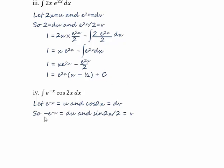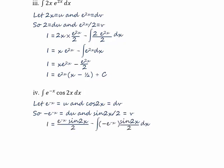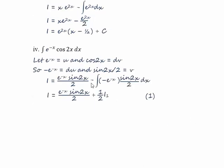As a sanity check: integrating du gives minus minus e to the minus x, which is the same as u. And differentiating sine(2x) over 2 gives 2·cos(2x) over 2 — the 2s cancel and we get cos(2x), so that looks correct. Putting those values into the equation, i equals e to the minus x times sine(2x) over 2, minus the integral of minus e to the minus x times sine(2x) over 2. The two minuses become a plus, and taking a half outside the integral sign, we have a new integral i1 equal to the integral of e to the minus x·sine(2x) dx.